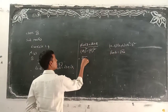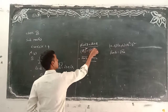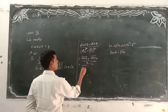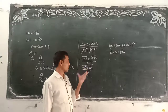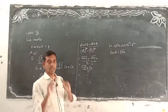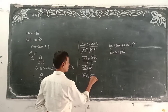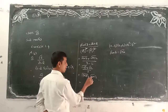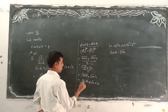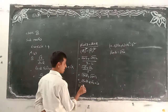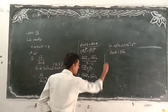So numerator: root(6×3) plus root(6×2) = root 18 plus root 12. Denominator: root 3 whole square minus root 2 whole square = 3 minus 2 = 1. To simplify: root 18 = root(9×2) = 3 root 2; root 12 = root(4×3) = 2 root 3. Root 9 value is 3, root 4 value is 2. So the answer is 3 root 2 plus 2 root 3.